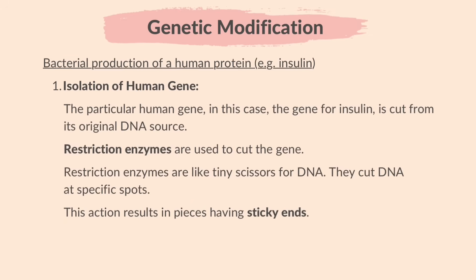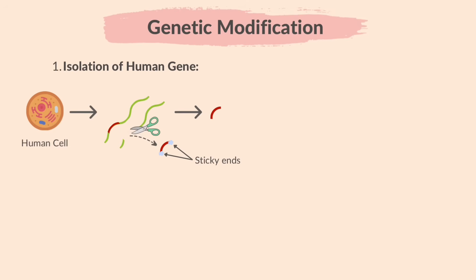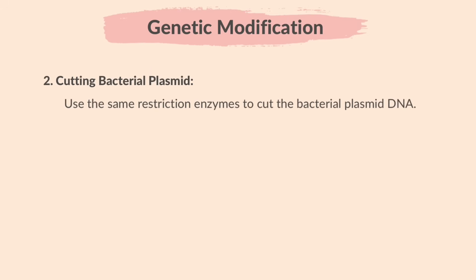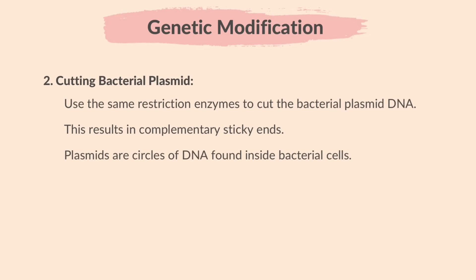This action results in pieces having sticky ends. Next, cutting bacterial plasmid. Use the same restriction enzymes to cut the bacterial plasmid DNA. This results in complementary sticky ends. Plasmids are circles of DNA found inside bacterial cells.